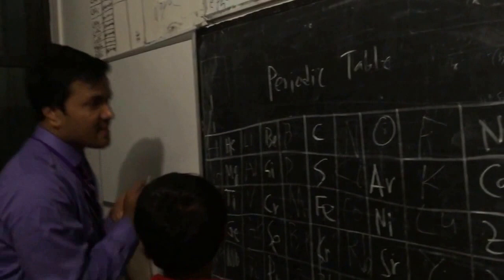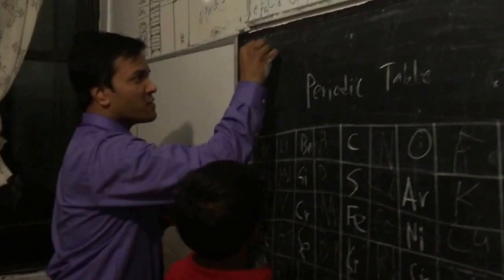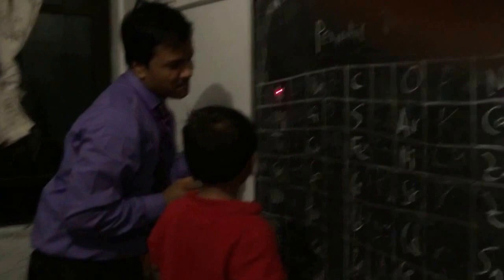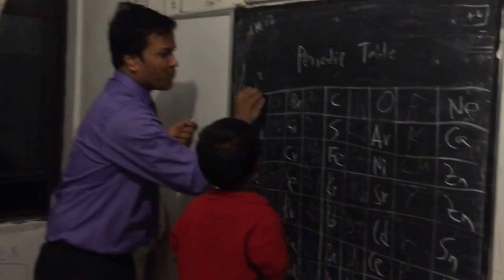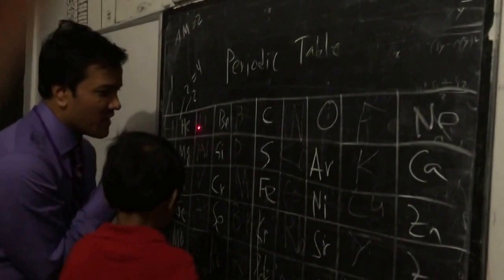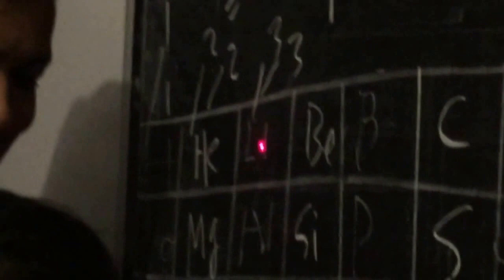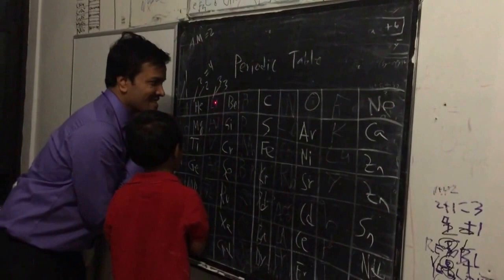Very good. So atomic mass for hydrogen is two. What is the atomic number for helium? Two. How many protons in helium? Two. What is the atomic mass for helium? Two plus two is four. Fantastic. What is the atomic number for lithium? Three. How many protons in lithium? Three. What is the atomic mass for lithium? Three plus three equals six. Fantastic.